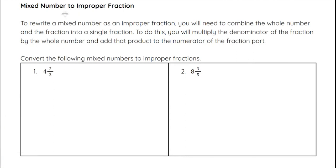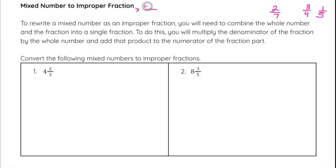Going along with mixed numbers, we often rewrite mixed numbers as improper fractions. An improper fraction is a fraction where the top number is larger than the bottom number. Typically when we think of a fraction, we think of something like 3 fourths, 1 fifth, or 2 sevenths — where the top number is smaller than the bottom number. It's a part on top and a whole on bottom. An improper fraction is where we have a bigger number on top and a smaller number on bottom.